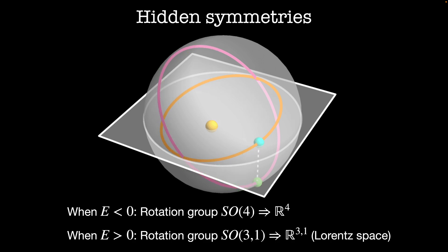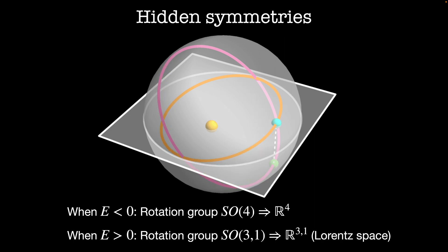Obviously I can't draw R4 for you, but hopefully this gives you an idea of what is happening behind the scenes. It turns out that beyond showing us there is a hidden four-dimensional symmetry in this simple problem, the Runge-Lenz vector was used to predict the energy levels of the hydrogen atom even before Schrödinger's equation was known. I'll put a link in the description to an article by Greg Egan on this topic — a lot of this story comes from blog posts by both Greg Egan and John Baez. In the next video, we'll be switching gears to start thinking about what happens if we have an extended body rotating in space. Thanks for watching, and I'll see you next time.